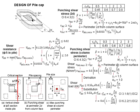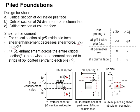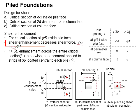For the critical sections located at av per phi offset from the column face, the shear force is actually generated by the reactions of the piles in resistance to the shear force caused by the columns. However, depending on the spacing between the columns, the shear enhancement can actually reduce the shear force to av per 2d.